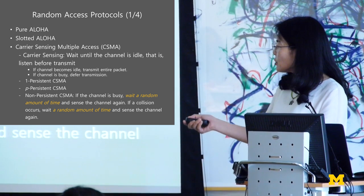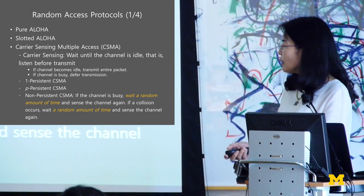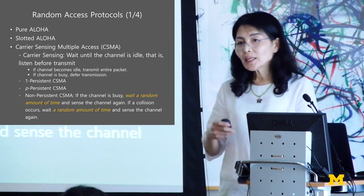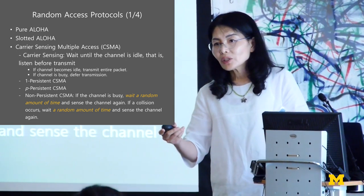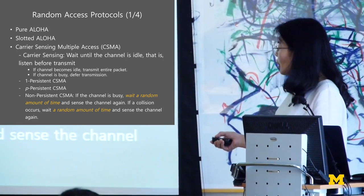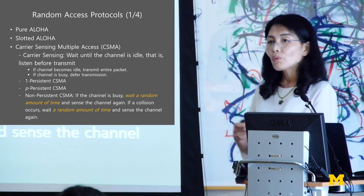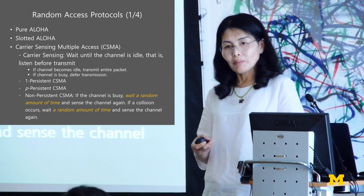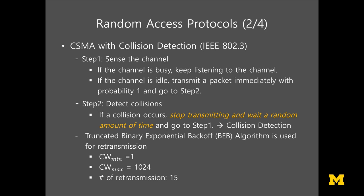Whenever the channel is busy, wait a random amount of time, then sense the channel again. Also, if a collision occurs, wait another random time. It improved a little more with collision detection, and was used for the LAN — IEEE 802.3.